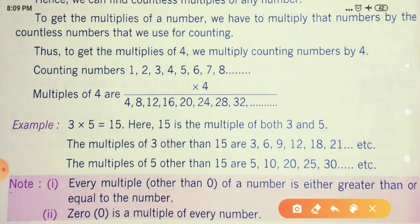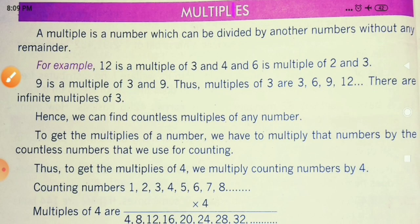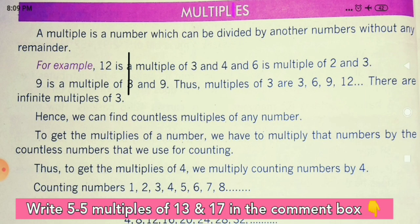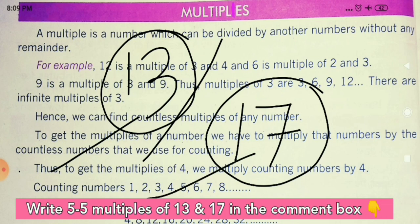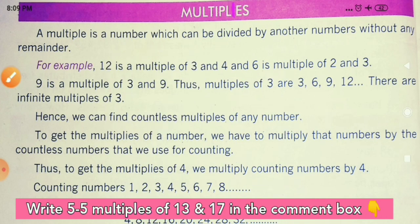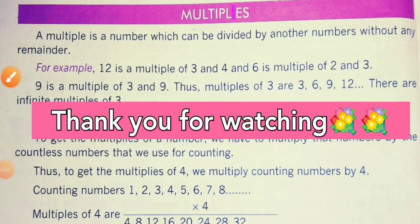Two more important points: every multiple of a number (other than zero) is either greater than or equal to that number, and zero is a multiple of every number. I hope the topic of multiples is now clear. Your homework: write at least five multiples each for 13 and 17, and post your answers in the comment box. Do like, share, and subscribe to this channel. Goodbye, children!